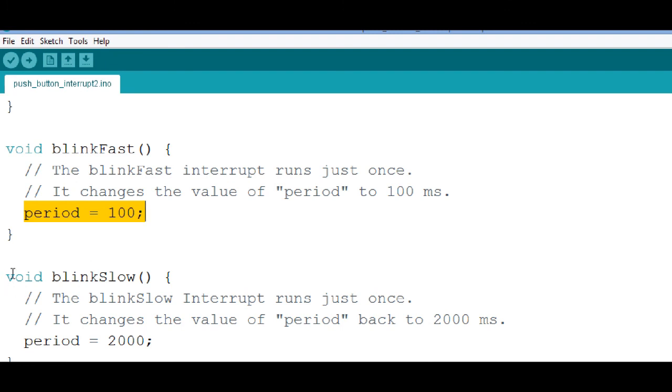The other interrupt called blinkSlow, he changes the period back to 2,000 milliseconds or 2 seconds. So that's all there is to it. Pretty simple.